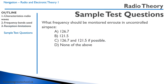A couple of test questions. What frequency should be monitored en route in uncontrolled airspace? A is 126.7 — that's the frequency we generally use. B is 121.5, the emergency frequency, which we want to monitor in case somebody is in distress. C is 126.7 and 121.5 if possible. So if we can, we go for C.